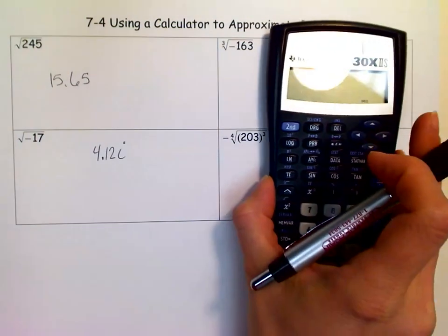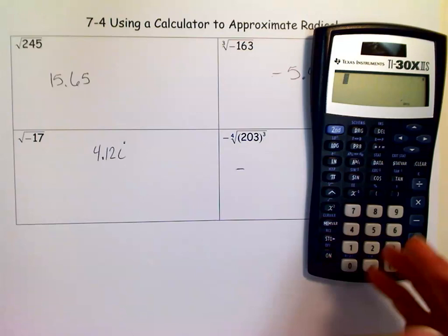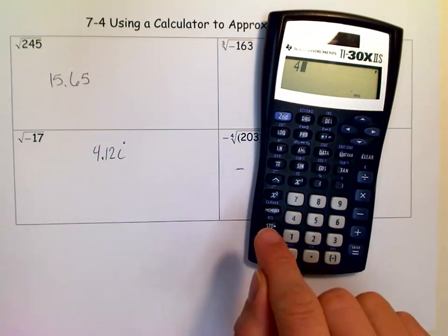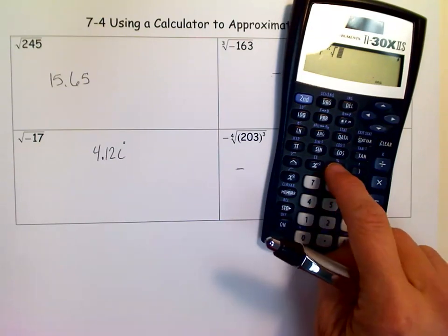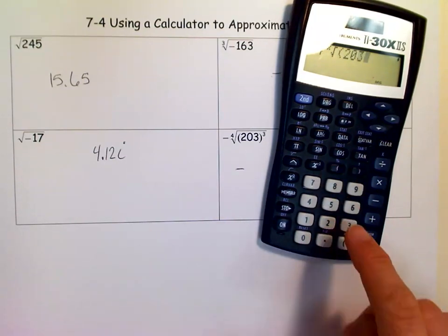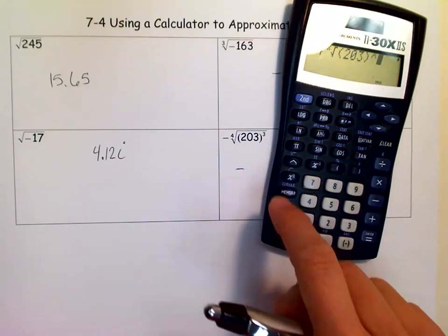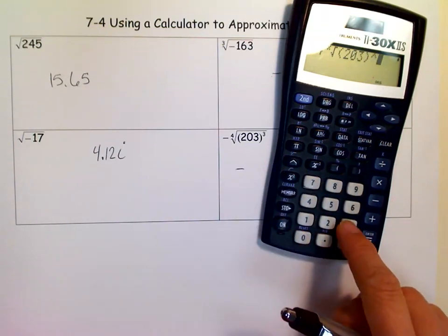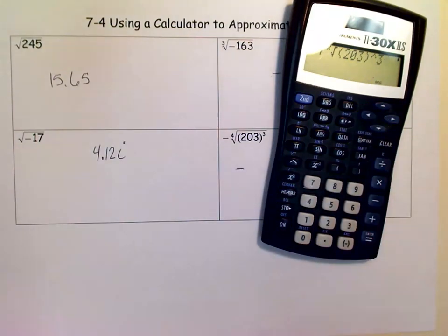Over here, we can put that in our calculator. We won't put the negative because it's outside, so we know it's going to be negative. But we're going to enter 4 because that's our index. Then we can write it exactly like it says: the fourth root of 203 cubed. We might need another parenthesis. Let's see how that works.